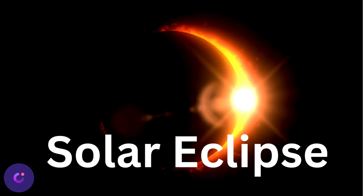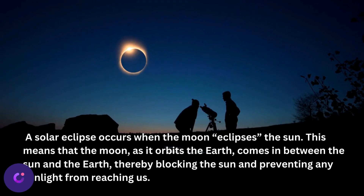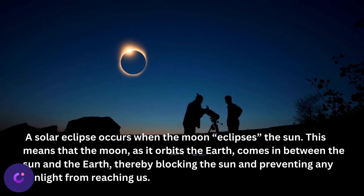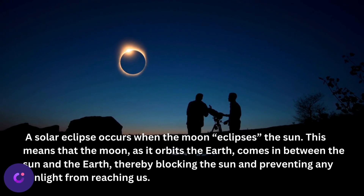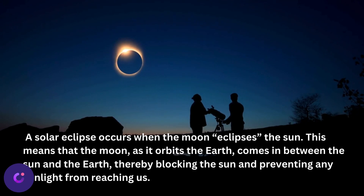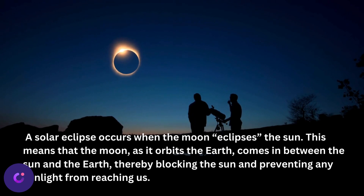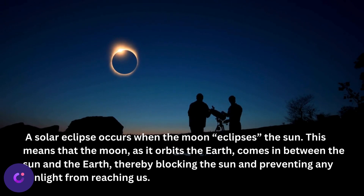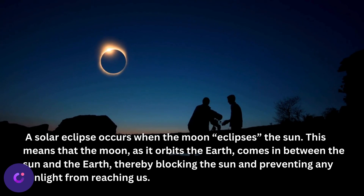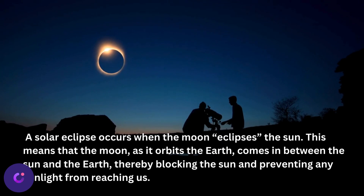Solar Eclipse. A solar eclipse occurs when the moon eclipses the sun. This means that the moon, as it orbits the earth, comes in between the sun and the earth, thereby blocking the sun and preventing any sunlight from reaching us.